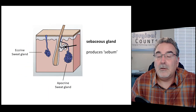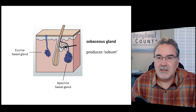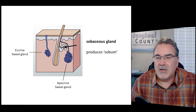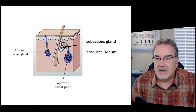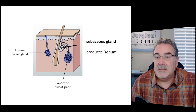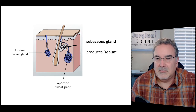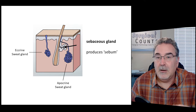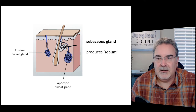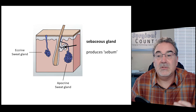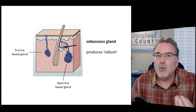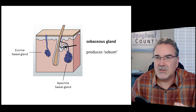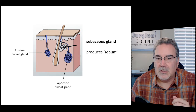Plastic surgery usually involves the skin in some sort. We'll take a look at a few of the major structures of the skin. In the skin, we have a couple of glands. We have, around the hair root itself, a sebaceous gland. This is a gland that produces sebum, an oily substance that keeps the hair follicle moisturized.